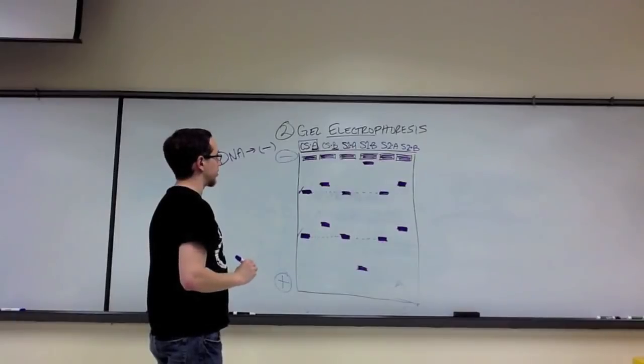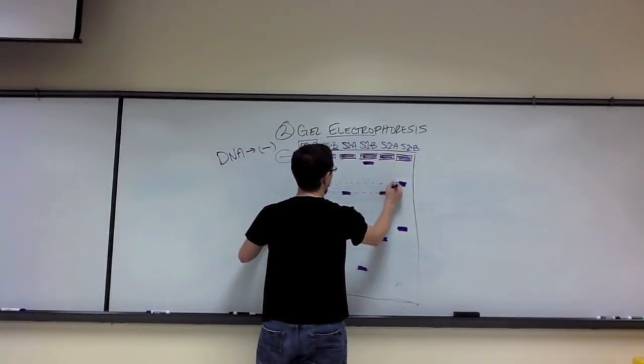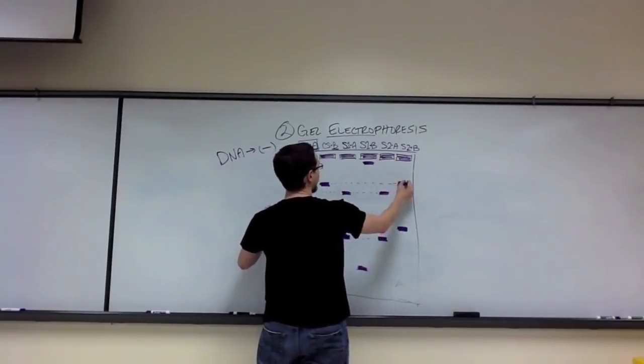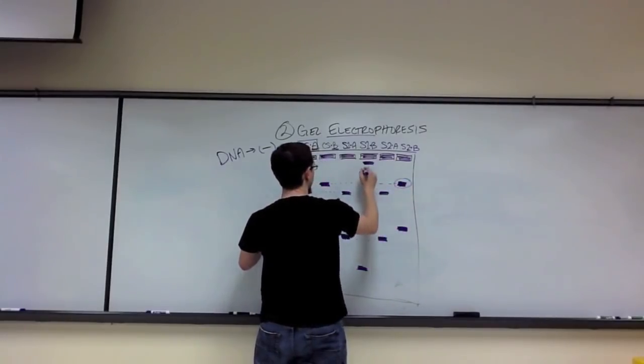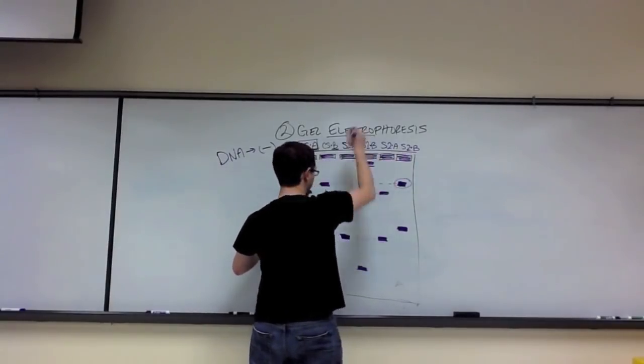And now, the big difference. When we cut with B, we only match suspect 2 there. Notice suspect 1's is way up here.